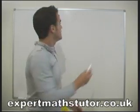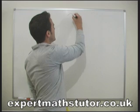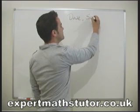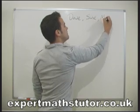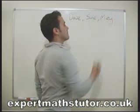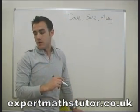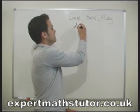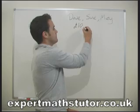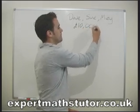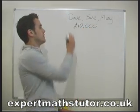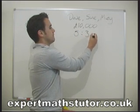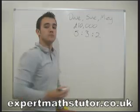And one last question, we find out that Dave and Sue and Mary, they've inherited some money. They've inherited ten thousand dollars from their grandma. And she specified in the will that it must be shared out in the ratio five to three to two.